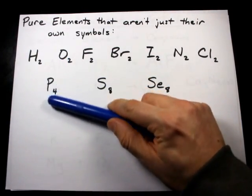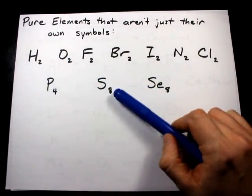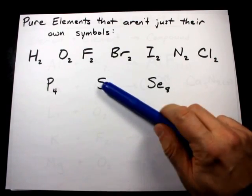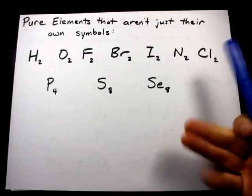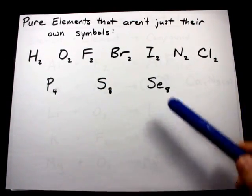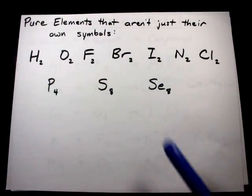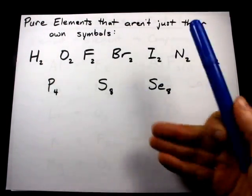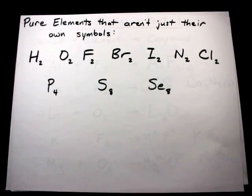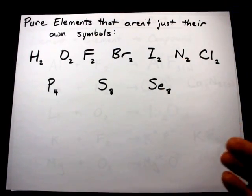Elemental phosphorus makes a cluster of 4 atoms. Elemental sulfur makes a cluster of 8 atoms. And I just learned as I was researching for this that selenium also likes making clusters of 8, but I've never seen that before in any question I've ever answered in my entire life. So, it's just for your information.